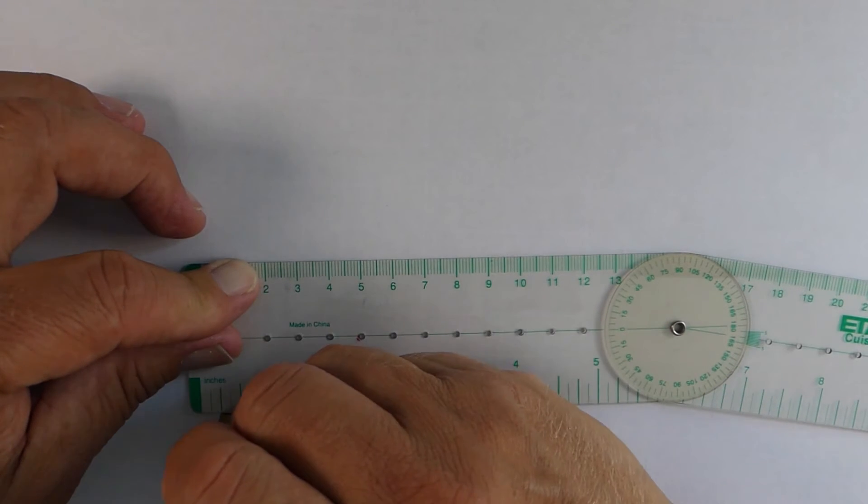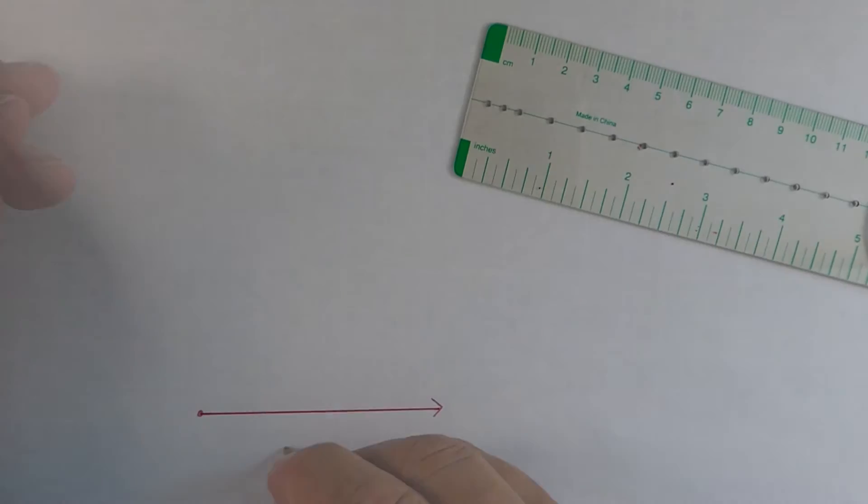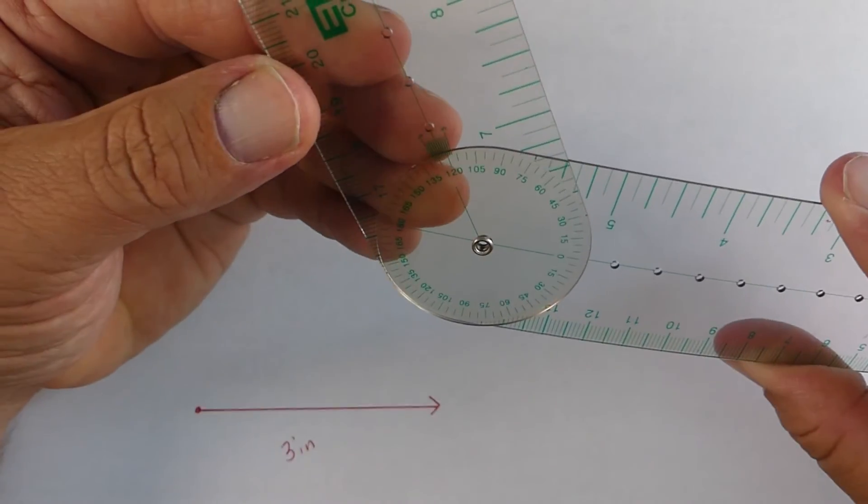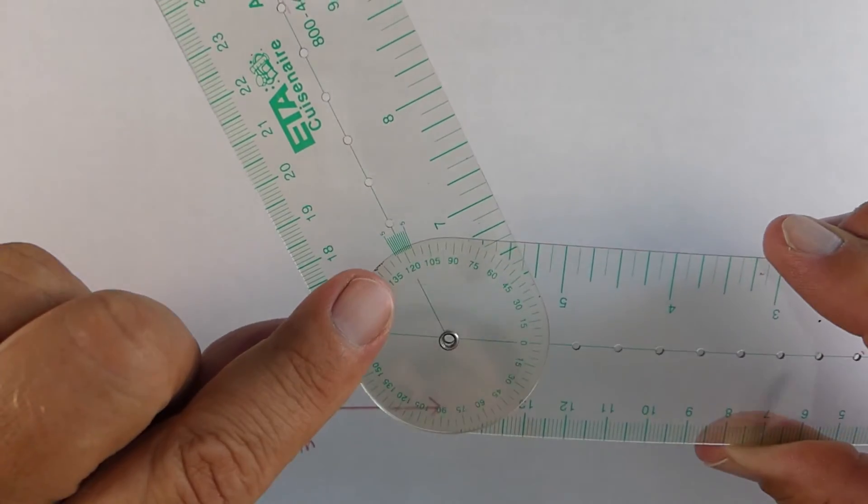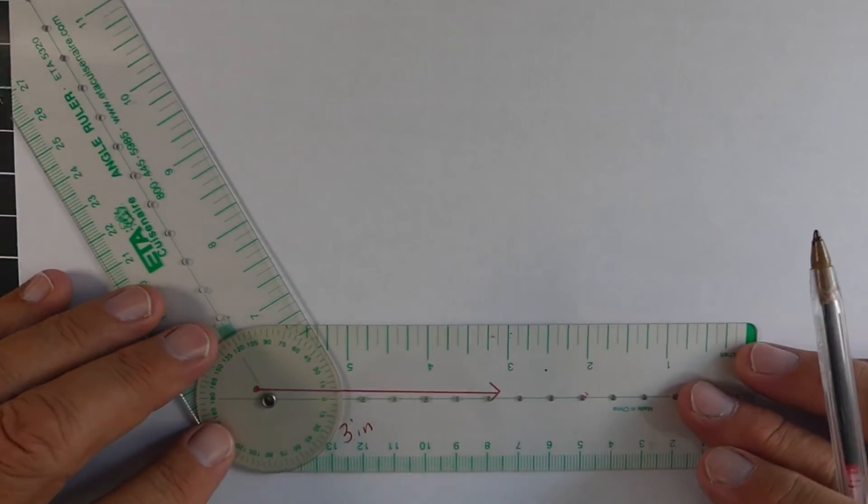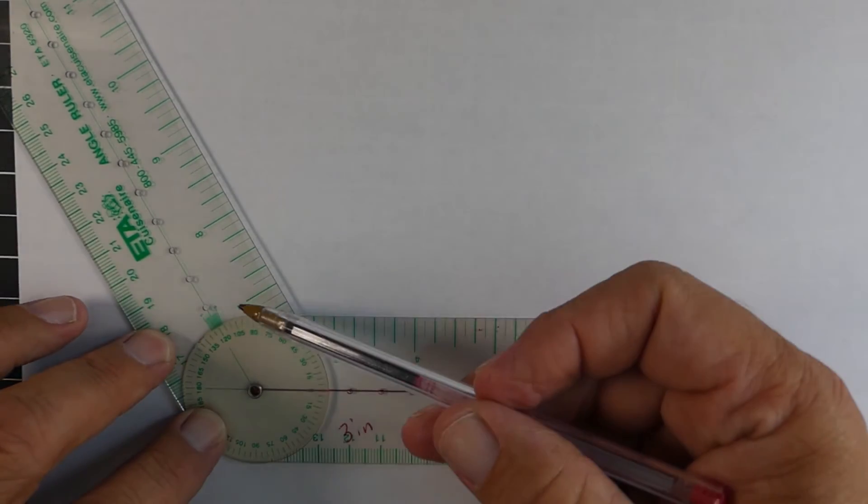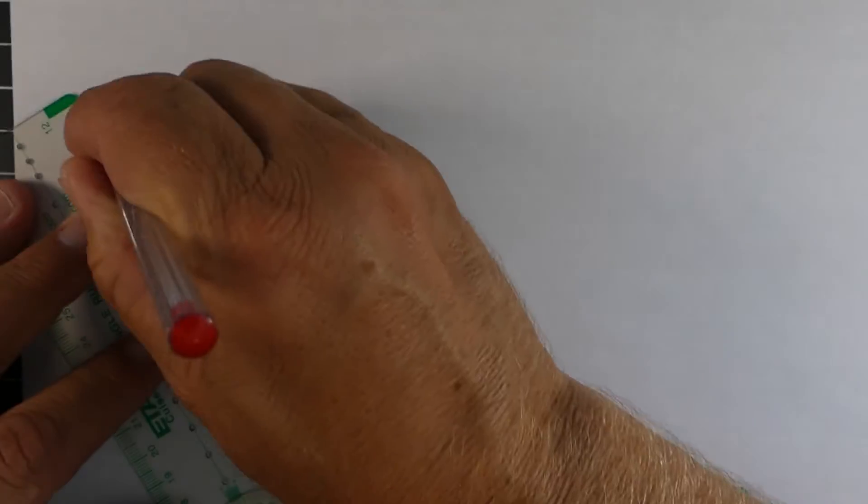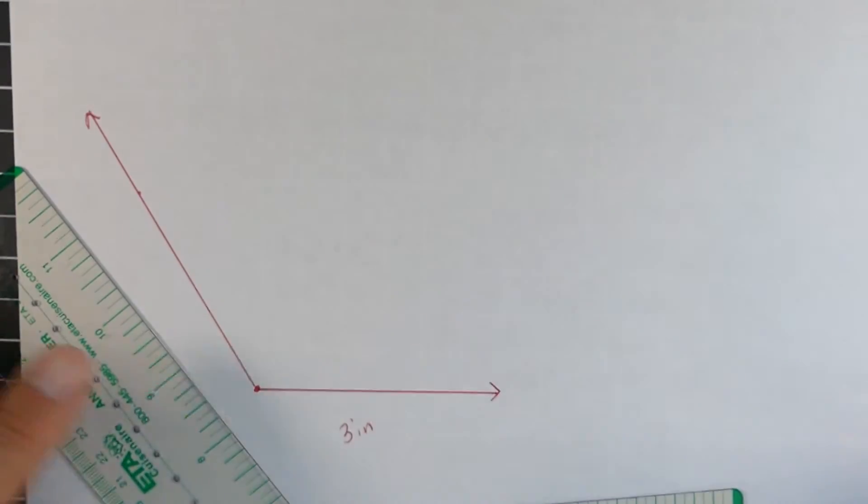So one more example of both of these. You start with your line or a ray. In this case, it was like three inches. Take the grommet. It's going to go right over top of the vertex. The bottom green line right on the line we've drawn. Find one of those holes and put a dot, and then connect them. And so this one's 120 degrees.